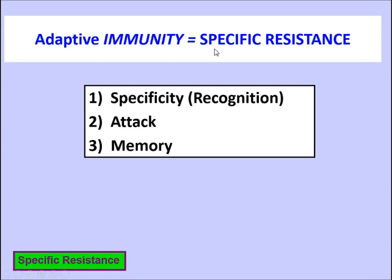We do refer to adaptive immunity as specific resistance, and you will definitely pick up on that specificity component as you make your way through the material. There are three characteristics that we can attribute to adaptive immunity. First, specificity — recognition of the foreign substance. Second, we launch an attack targeting that specific substance. And third, we have a memory of both of these activities, which we then put to use.